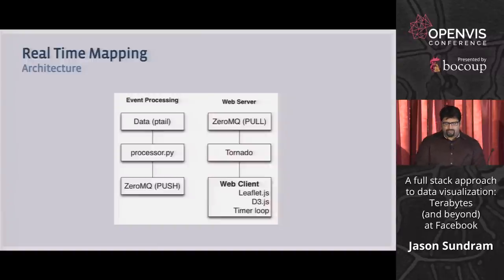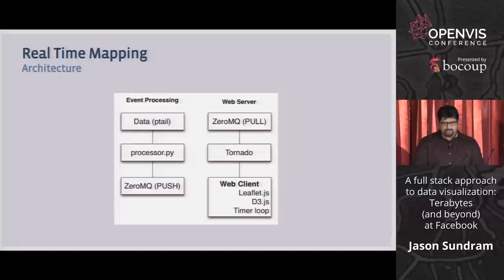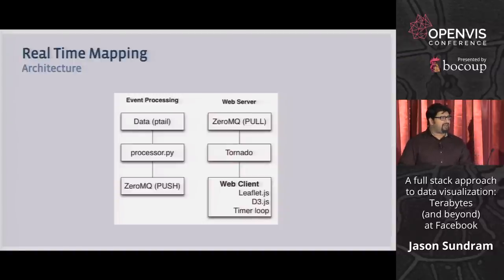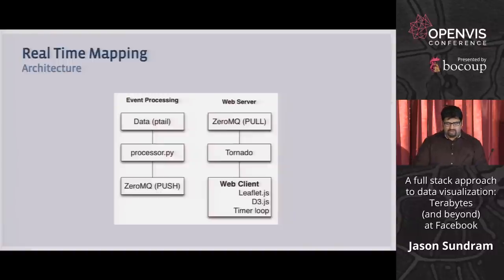ZeroMQ is really the trick to connect the web server to this processor. ZeroMQ bills itself as an intelligent transport layer. IPython Notebook also uses this. I read the docs, which in terms of documentation is probably one of the best experiences I've ever had — really super readable, friendly documentation. I decided a push-pull architecture was going to work: the event processor in the background pushes stuff out, and the web server just goes, give me more.